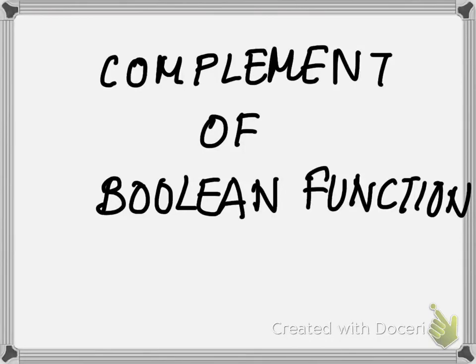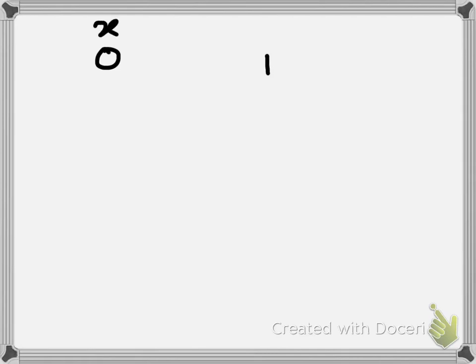In this video we are going to see how to compute the complement of a boolean function. We have seen what a boolean function is. The complement of any boolean variable converts a 0 to 1 and vice versa — if x is 0, x complement would be 1; if x is 1, x complement would be 0. In the same way, we can consider the complement of a boolean function.